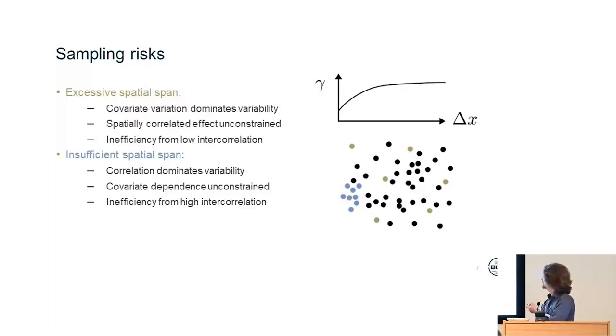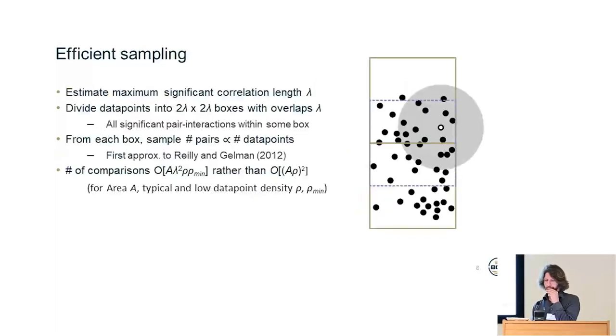On the other hand, if you take a spatial subset as a sample, then these points are very highly spatially correlated, which dominates the variability. So you don't know very much about how the variation of covariates with space affects the value of the data point. And effectively, because these points are very highly interrelated, you have significant computational inefficiency from considering all of them.